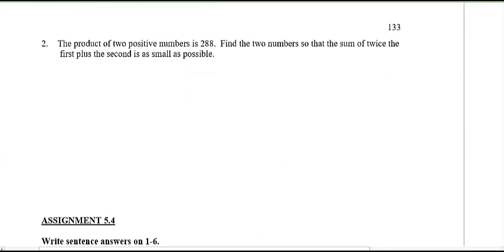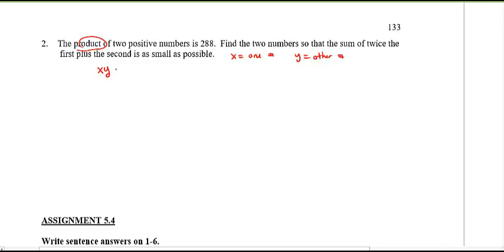One more example. If you feel confident, press pause and try it yourself, then come back to check your answer. If not, keep listening. This time: the product of two positive numbers is 288. Let x be one number and y the other number. We know x times y equals 288 — but that's really the secondary equation because we're not asked to maximize or minimize the product.